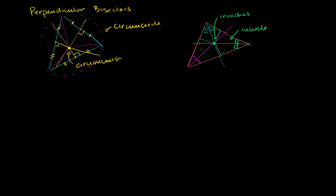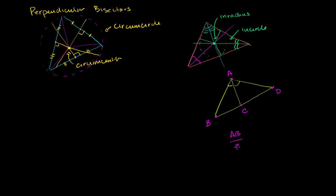The other thing we learned about angle bisectors — we just had to draw one — so let me draw another triangle. Let me draw an angle bisector: I'm going to bisect this angle, so this angle is equal to that angle. Let me label some points: let's say that is A, this is B, this is C, and this is D. We learned that if AC is really the angle bisector of angle BAD, then the ratio AB over BC is going to be equal to the ratio of AD to DC. Sometimes this is called the angle bisector theorem.